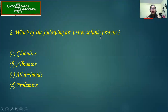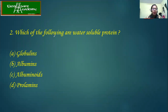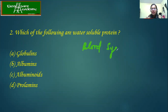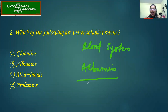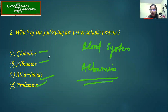Which of the following are water-soluble proteins? We have globulins, albumins, albinoids, and prolamins. In the blood circulatory system, the protein present in maximum percentage is albumin. So from here, these others are not water-soluble proteins. Only albumin is your water-soluble protein.